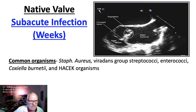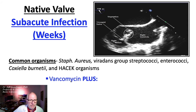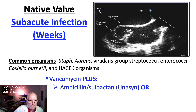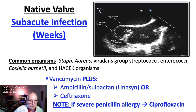Native valve subacute infection occurs over a period of weeks. Common organisms include Staph aureus, viridans group streptococci, enterococci, Coxiella burnetii, and HACEK organisms. Treatment includes vancomycin plus ampicillin-sulbactam, also known as Unasyn, or ceftriaxone.